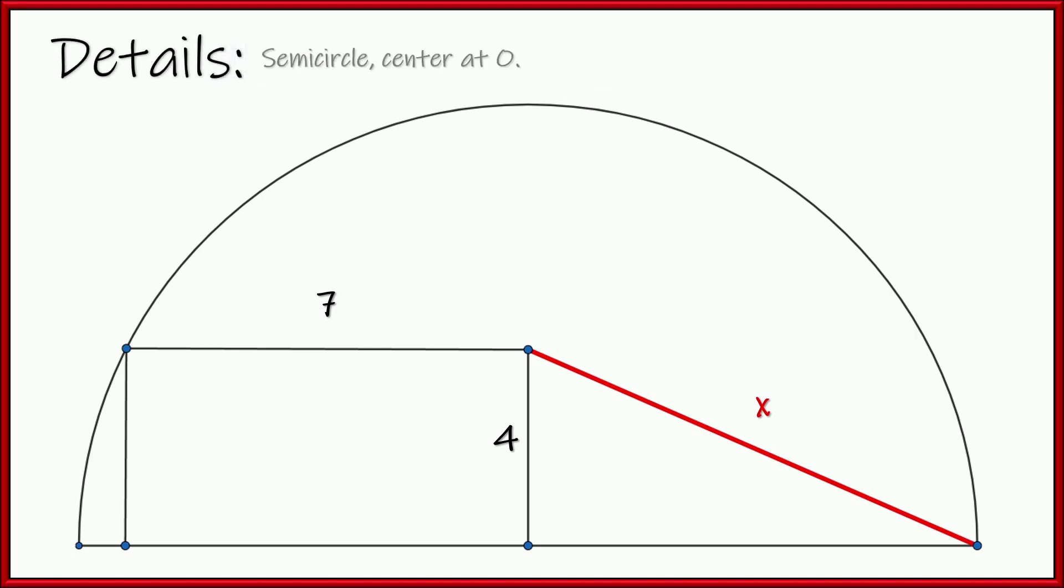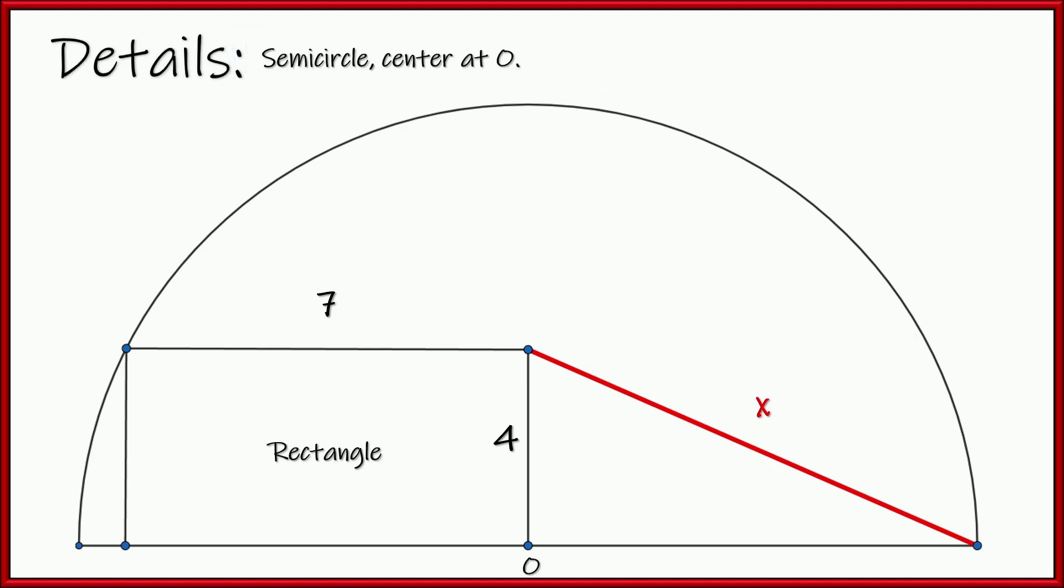Here are the details. We've got a semicircle with the center O and this shape over here with the side of 7 and 4. That is a rectangle. So our job is to figure out what is the length of this segment from here to here.